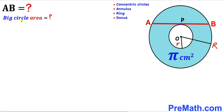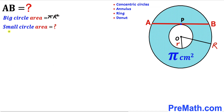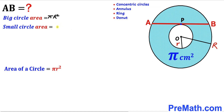We are going to calculate the area of the big circle. Recall the area formula: Area = π r². So the big circle area is π times uppercase R². Likewise, the small circle area is π times lowercase r².